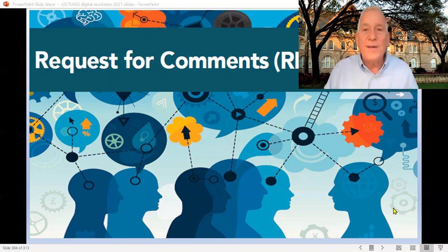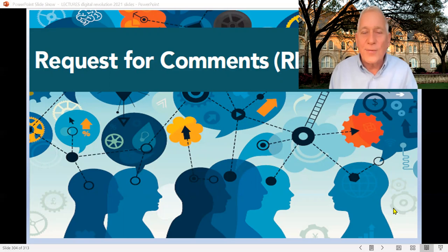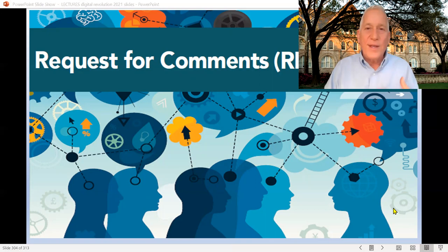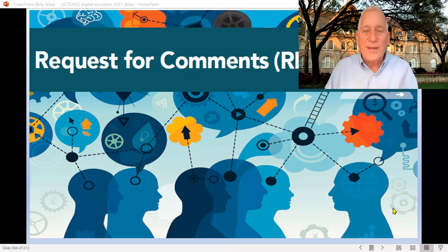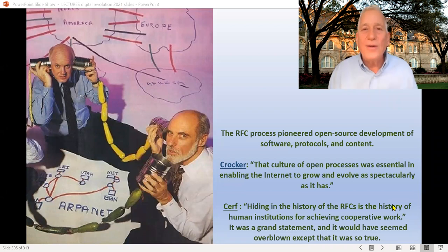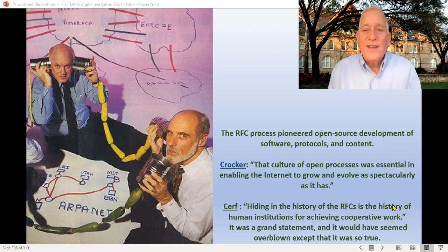So they come up with a way to have rules but not call them rules. What Steve Crocker calls them is 'requests for comment,' and that becomes the way they get the standards for doing the internet — making everybody feel they collaborated in it rather than it being handed down from on high. It's amazing that that's still the way the internet is being built. We're up to RFC 8100 or so, still building and designing the internet collaboratively. It was totally open sourced, and by doing it that way, it allowed the internet to grow spectacularly.